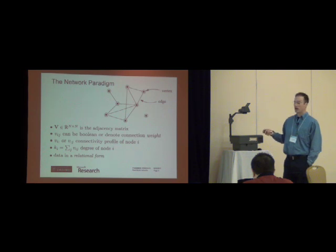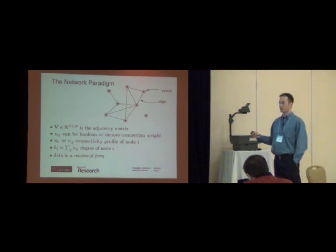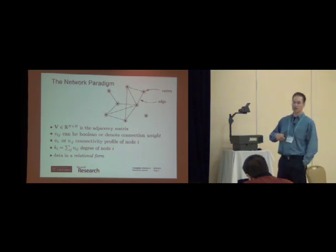If you take a row or column of capital B, you've got a connectivity profile. But more important to this presentation, if you sum up over that connectivity profile, you get a degree, small k, for a node. And if this is a non-directed network, then you just have one degree. If you have directions, if you have arrows on those links, then you have an in-degree and an out-degree.